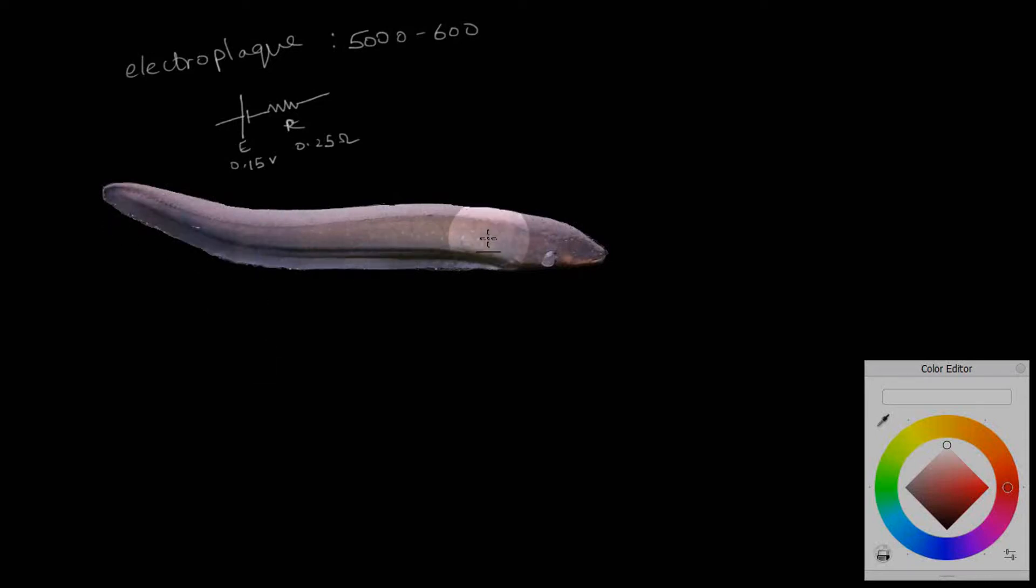These electroplaques are arranged in a series-parallel combined array with one end starting at its tail and the other end ending near its head. The series would be something like this—I'll do it in red—so it would be battery and battery and so on.